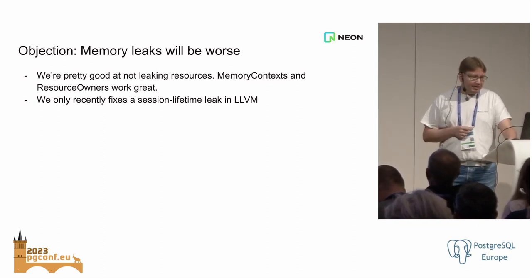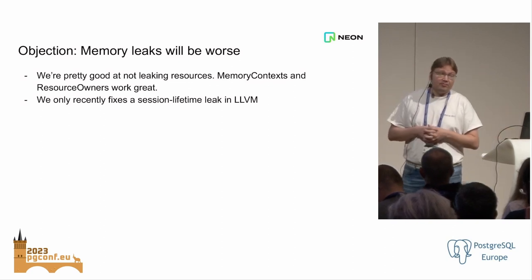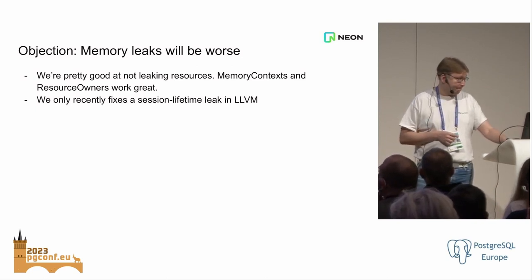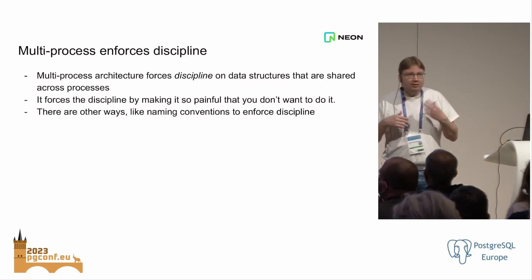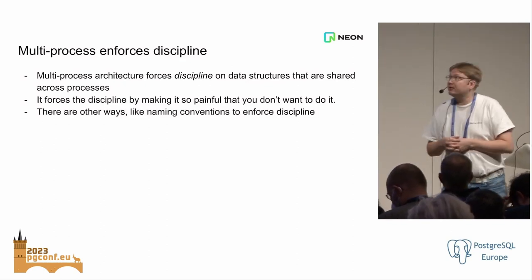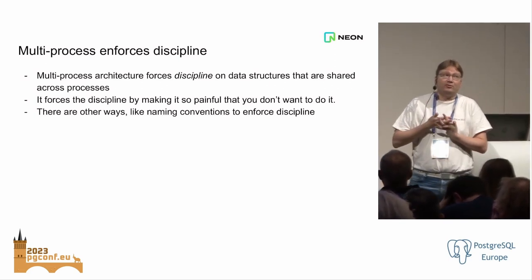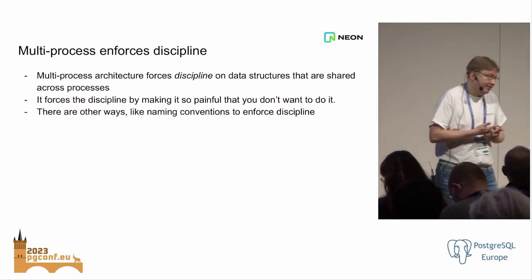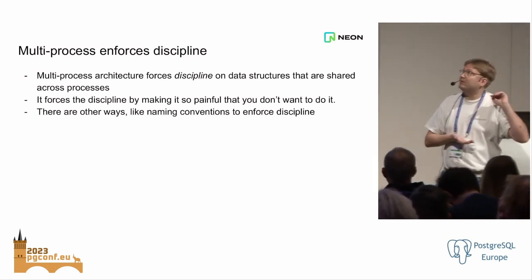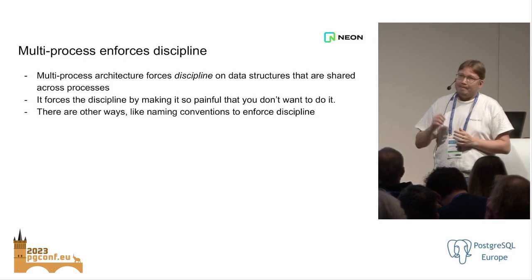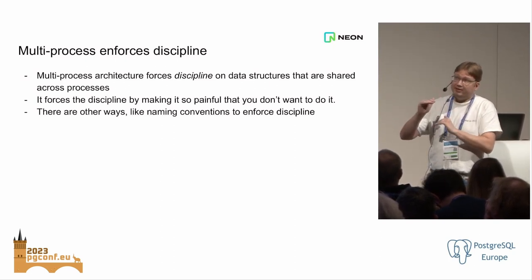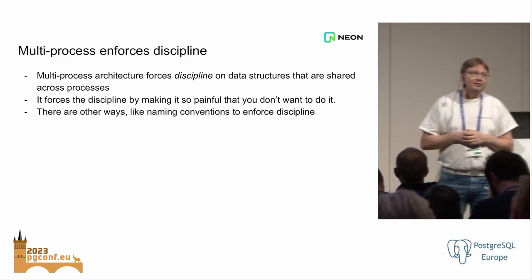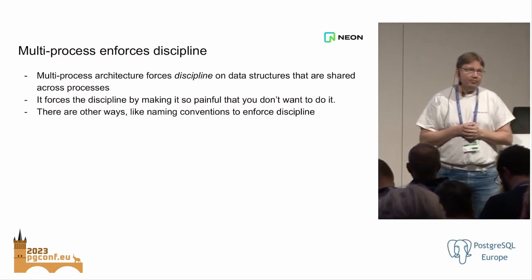Those are the basic objections that were raised on the hackers thread and that I heard from others — all the objections fall into one of those categories. There was one more argument in favor of multiprocessing: having a multi-process architecture kind of forces you to think very hard about what you share between processes, because it's so painful. You really need to make an explicit decision that this piece of memory is shared, and I'm going to store this struct or hash table in shared memory. So it forces you to think hard about what needs to be shared and what doesn't.